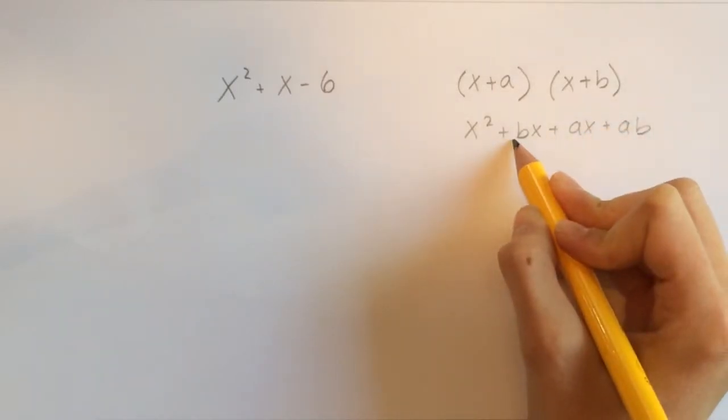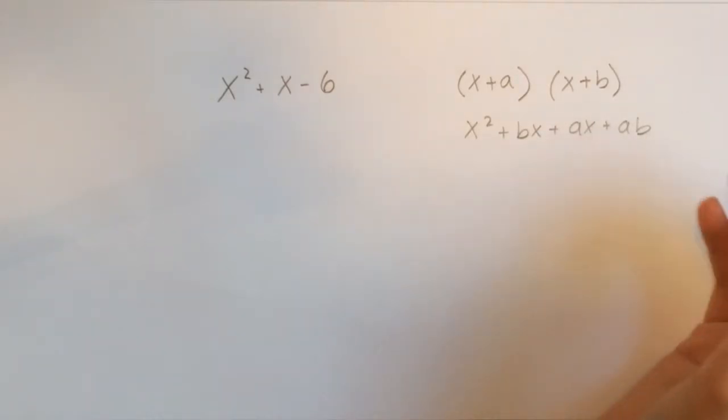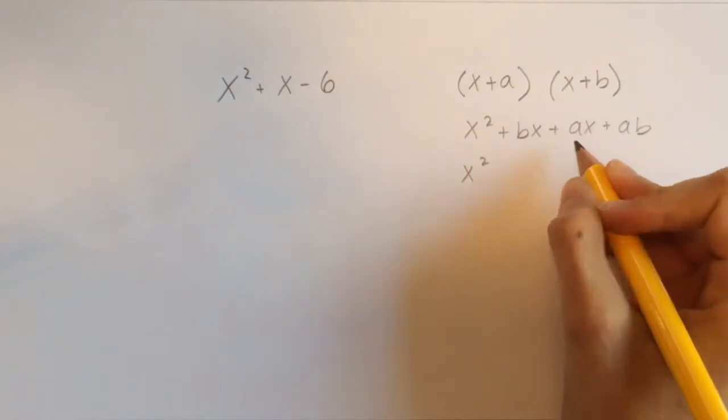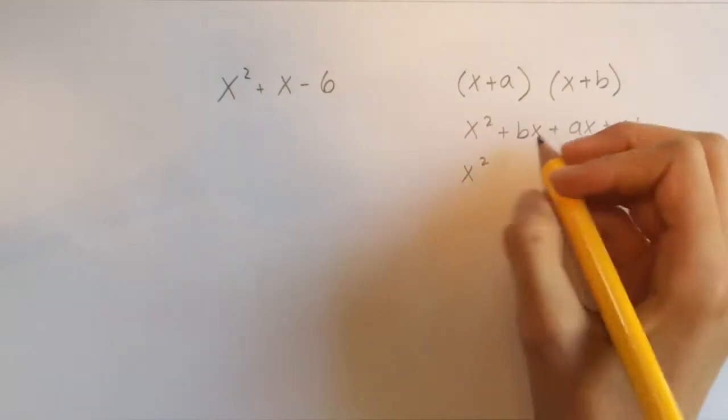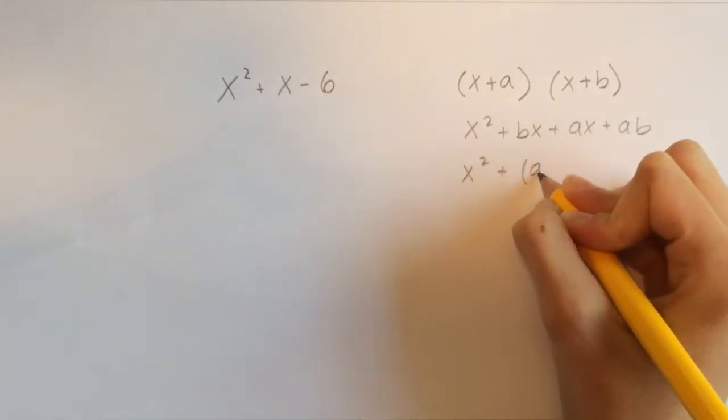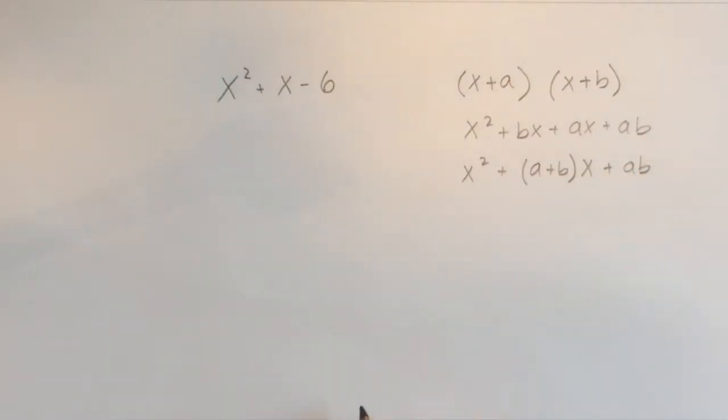And then right here we have bx and ax. They are both terms with x in them, so we can change that into b plus a times x. Or we can do it in the other order, a plus b times x. So x squared plus a plus b times x plus ab.